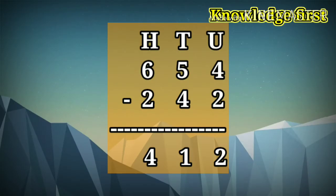Next example, 654 minus 242. Always we start subtraction from unit place. 4 minus 2 is equal to 2. 5 minus 4 is equal to 1. 6 minus 2 is equal to 4. Total answer is 412.